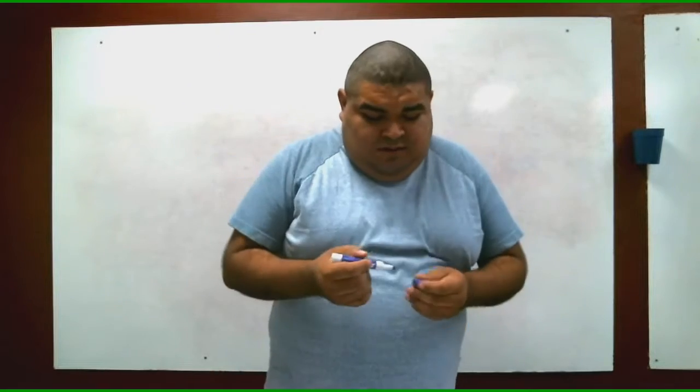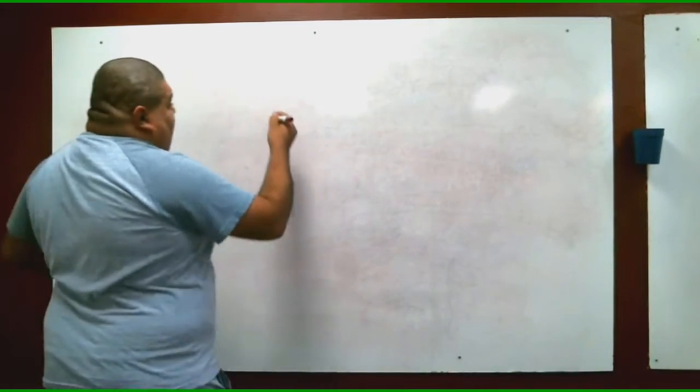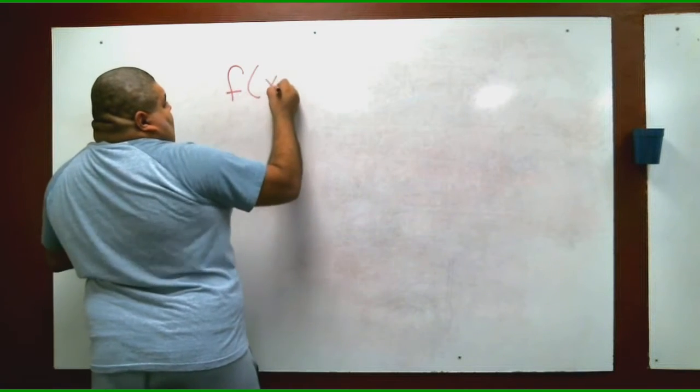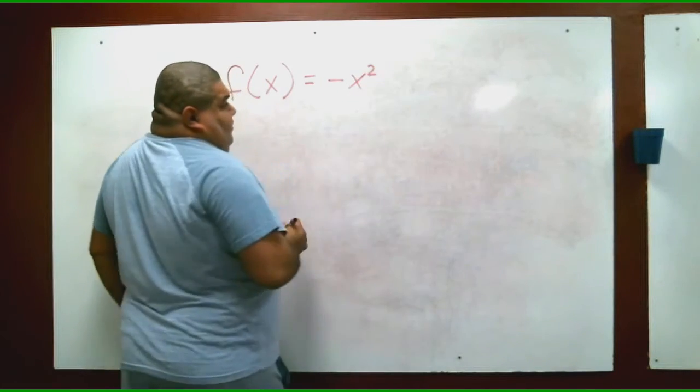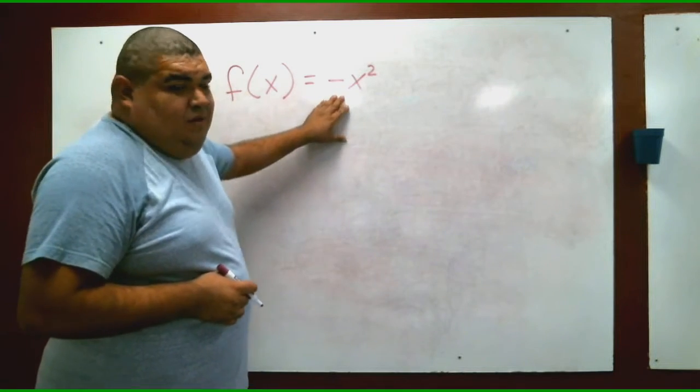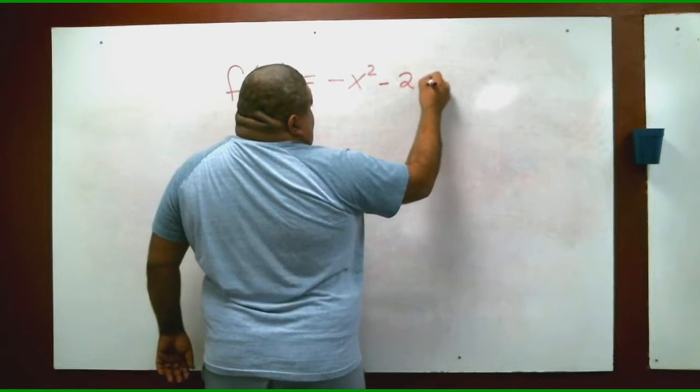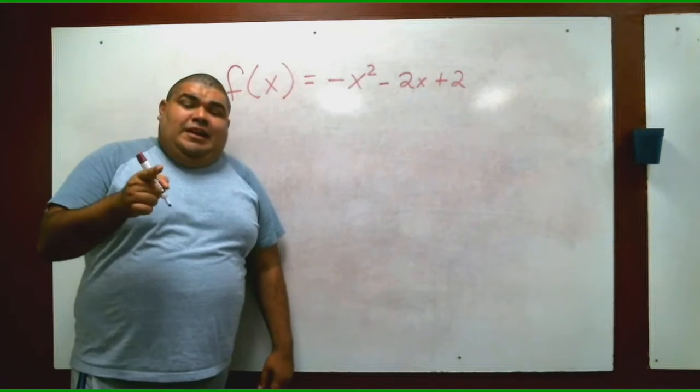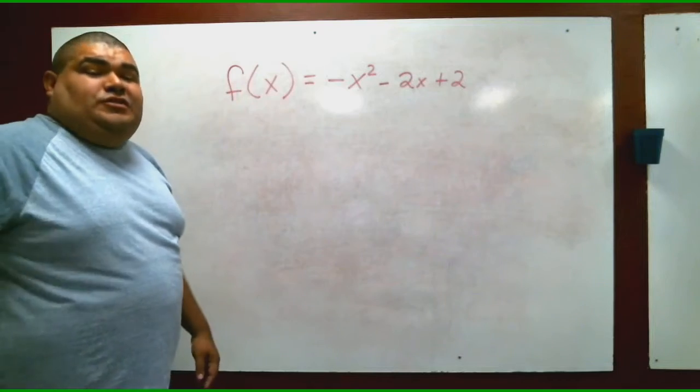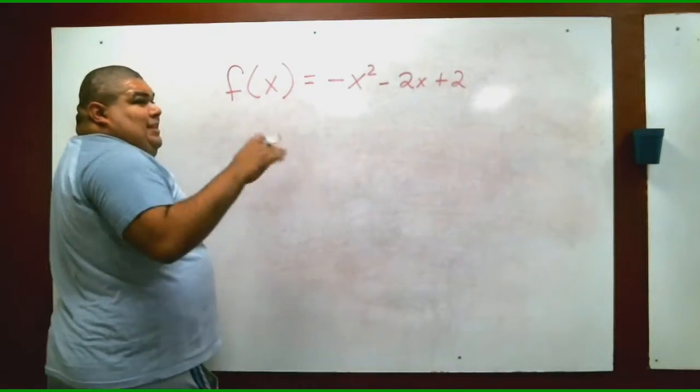Remember we're only solving for the x of the vertex, of the origin of the lowest point or the highest point depending on if it goes down or up. The problem for today for you guys is f(x) equals -x² minus 2x plus 2. Notice that it's a negative. Again, remember you're only solving for the x-vertex for today. Next class we're going to actually step it further. So here's the first example, label it a, b, and c.